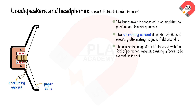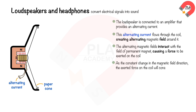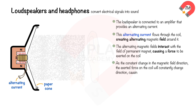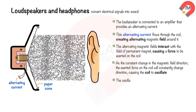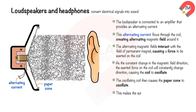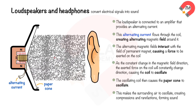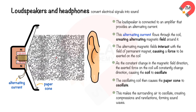This interaction causes a force to be exerted on the coil. As the magnetic field direction constantly changes, the exerted force on the coil will constantly change direction, causing the coil to oscillate. The oscillating coil then causes the paper cone to oscillate. This makes the surrounding air oscillate, creating compressions and rarefactions, forming sound waves.